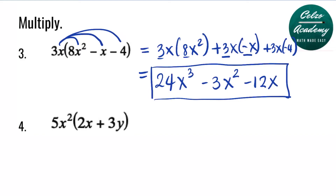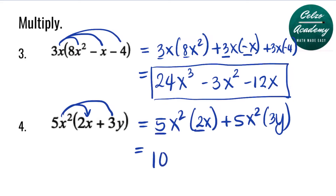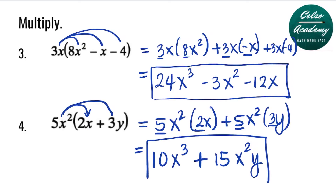Question number 4: 5x squared times 2x plus 3y. First, we distribute 5x squared times 2x: 5 times 2 is 10, and x squared times x to the first is x cubed, because we add the powers 2 and 1. Second, 5 times 3 is 15, and we have different variables x squared and y, so we write them as x squared times y. So the answer for number 4 is 10x cubed plus 15x squared y.